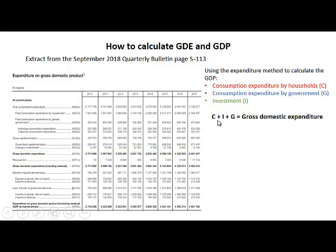C plus I plus G gives us gross domestic expenditure. There is also a residual item shown in the quarterly bulletin, which is just a balancing item. You will either add or subtract this residual item depending on what the amount is for that particular year. Then we add exports of goods and services.